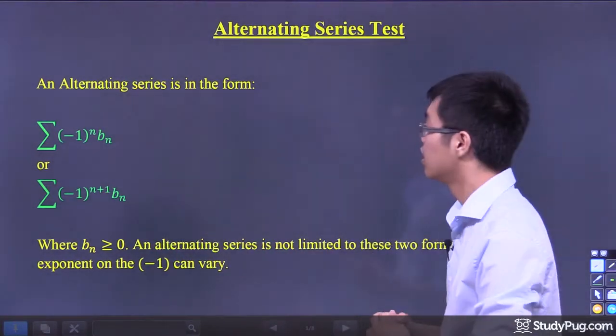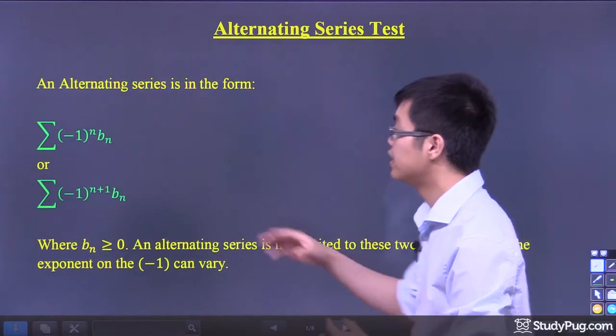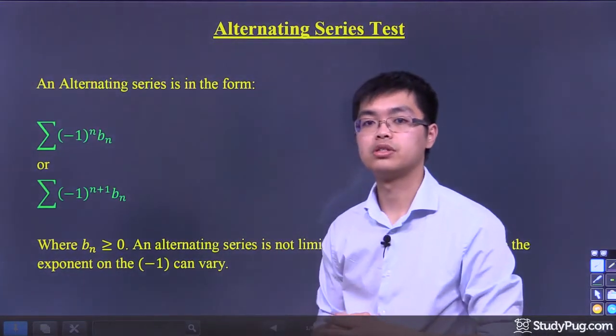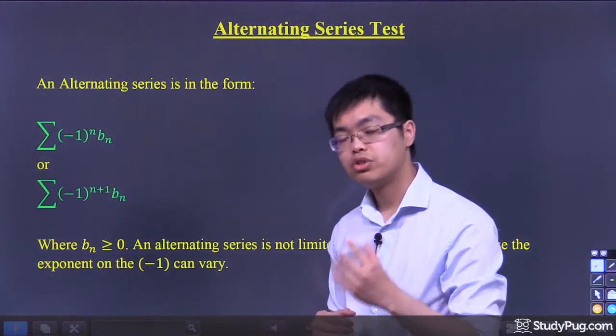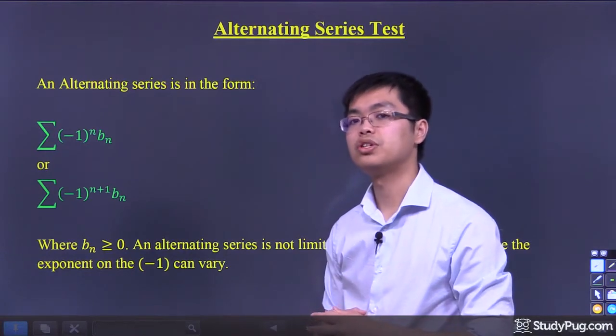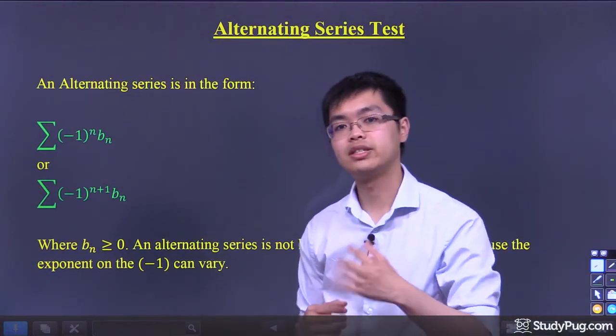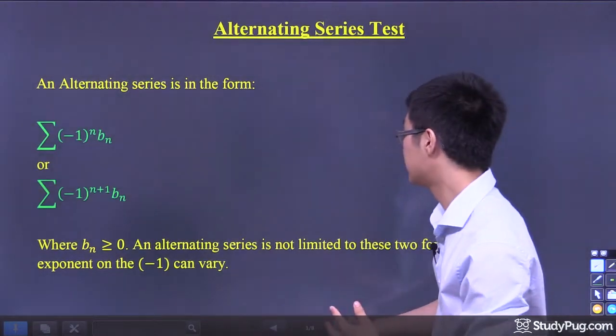So here, we want to see if this series converges or diverges. And in order to know if it diverges or converges, we have this test called the alternating series test.